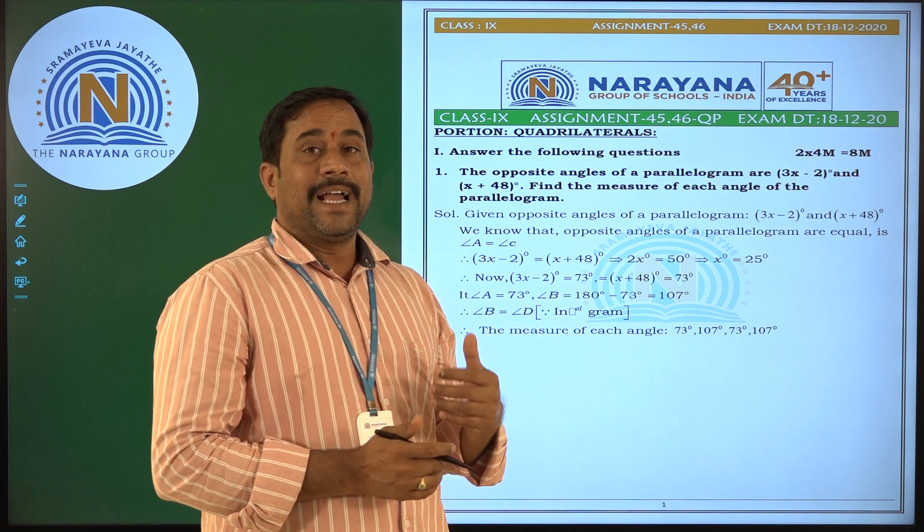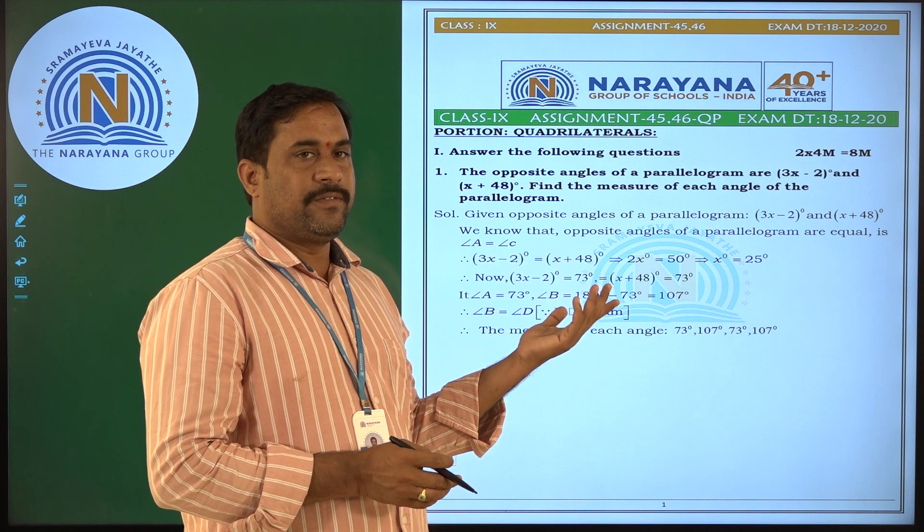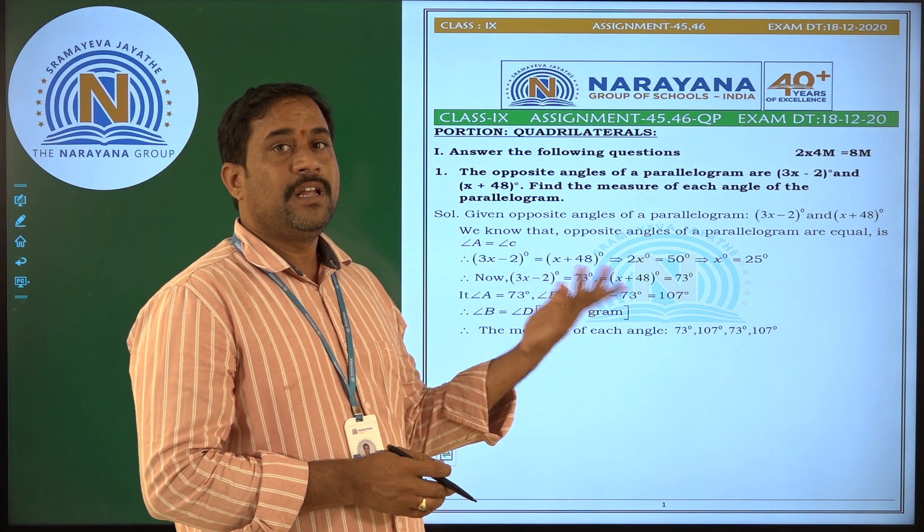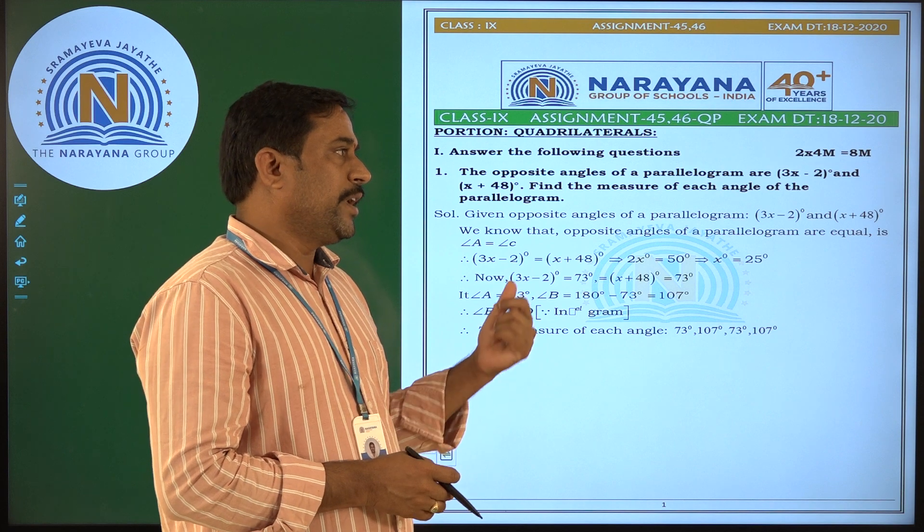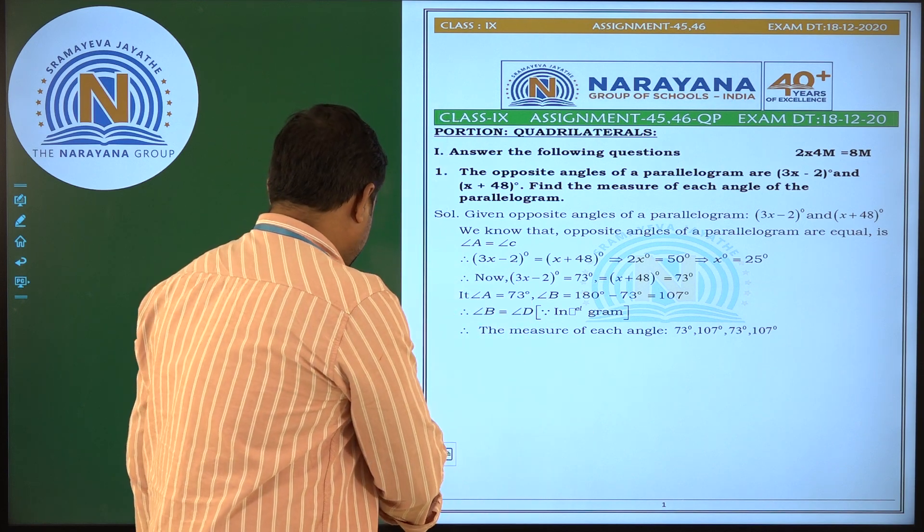So the angles of the parallelogram are 73, 107, 73 again, and 107. Like that we are getting the angles of a parallelogram. And next question.